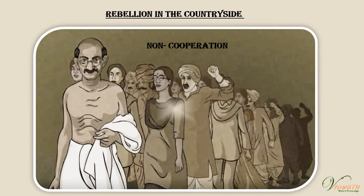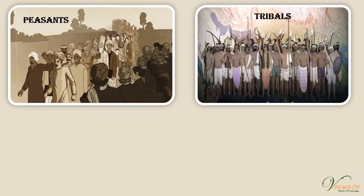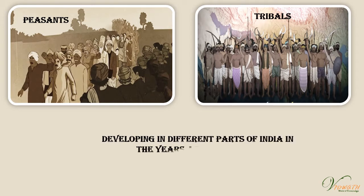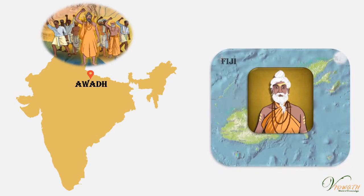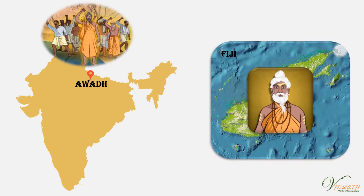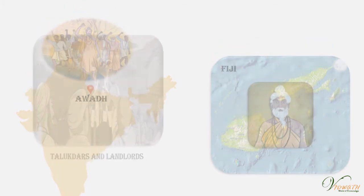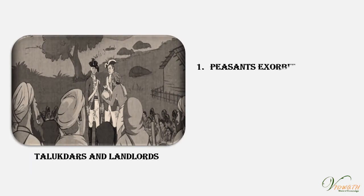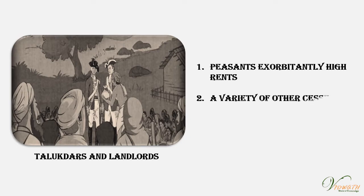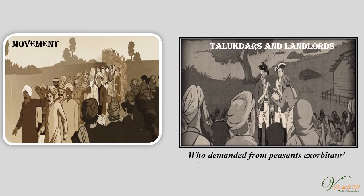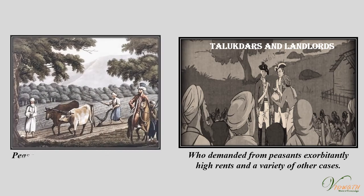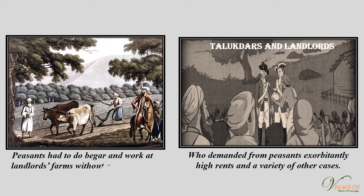From the cities, the non-cooperation movement spread to the countryside, drawing into its fold the struggles of peasants and tribals developing in different parts of India after the war. In Avadh, peasants were led by Baba Ramachandra, a sanyasi who had earlier been to Fiji as an indentured labourer. The movement was against talukdars and landlords who demanded exorbitantly high rents and a variety of other levies. Peasants had to do begar and work at landlords' farms without any payment.